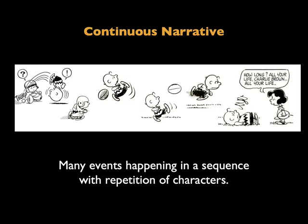The next narrative mode is the continuous narrative — also like a long strip, but in this case we have a repetition of characters. We can show one character going through a series of episodes in their lives, which lead them to their inevitable conclusion. There's a path we're following, seeing this one person walking along their journey through a continuous landscape linking the episodes together. Here we see Charlie Brown failing to kick the football when he's young, then practicing and practicing, and yet in the end ultimately failing.